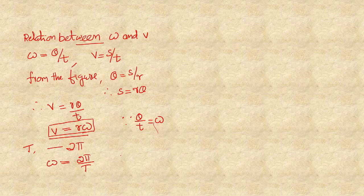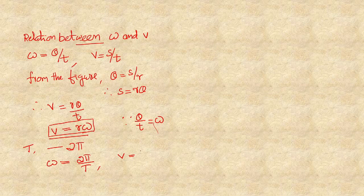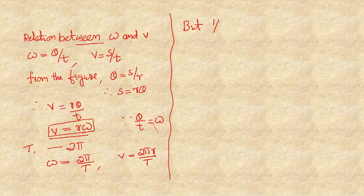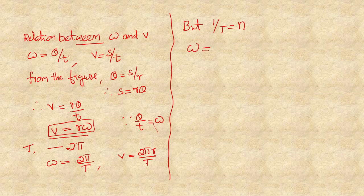So omega equals 2π divided by T. Also, since we found that V equals 2πR divided by T, and since 1 divided by T equals frequency N, therefore omega can also be expressed as omega equals 2π times N.